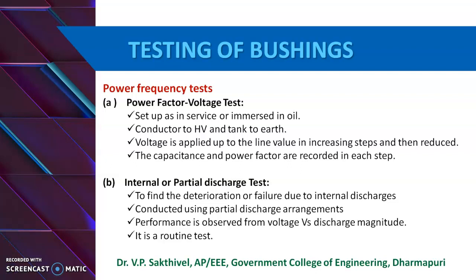The next topic is testing of bushings. As with insulators, there are two types of tests: the power frequency test and the impulse voltage test. In the power frequency test, we conduct five tests namely: power factor voltage test, internal or partial discharge test, momentary withstand test at power frequency, one minute wet withstand test, and visible discharge test at power frequency.